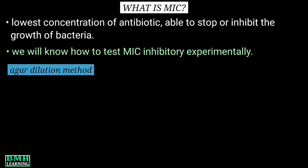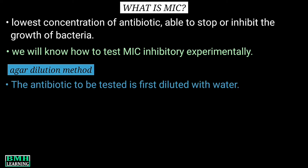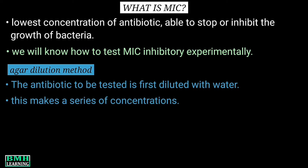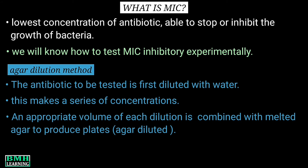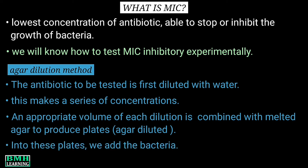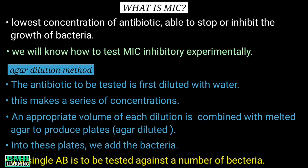In this technique, the antibiotic to be tested is first diluted with water to make a series of concentrations. An appropriate volume of each dilution is then combined with melted agar to produce plates, into which we add the bacteria. This method is especially useful when a single antibiotic is to be tested against a number of bacteria — up to 30 different bacteria can be tested at a time.